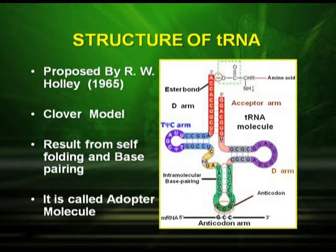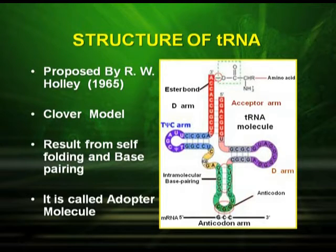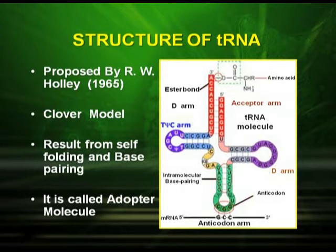As you can see from the picture, there are three important loops. The one at the bottom is called the anticodon arm or anticodon loop. The one on the top has a site for amino acid binding. On the basis of the anticodon that it codes on the mRNA, it can select the amino acid from the cytoplasm. Each amino acid has a specific tRNA.